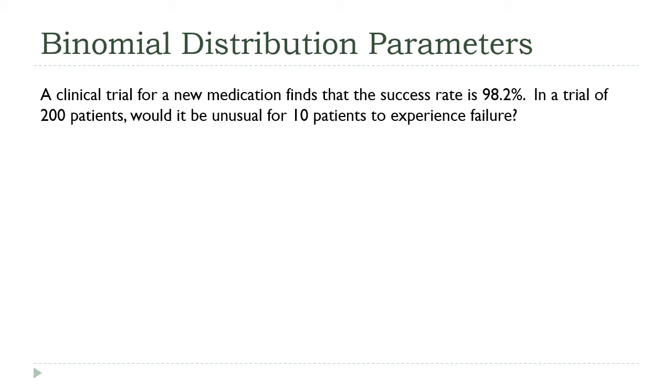So in this question we can see where the x value comes in. We have a medical situation. The probability of a successful result is 0.982 or 98.2 percent. We're doing a trial of 200 patients.